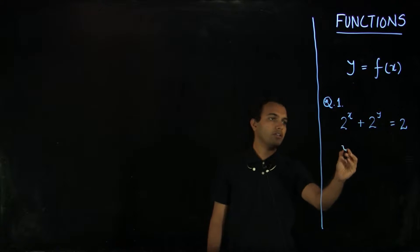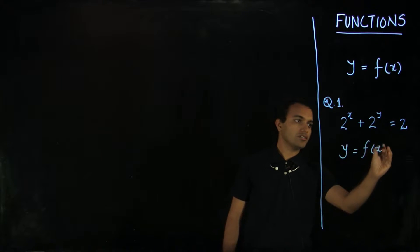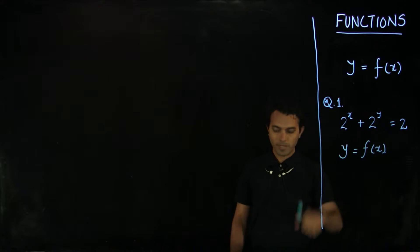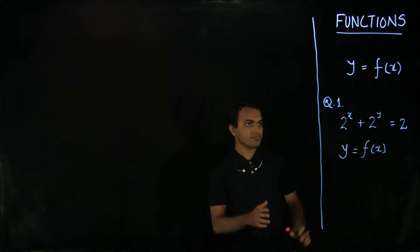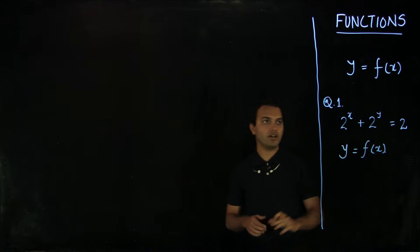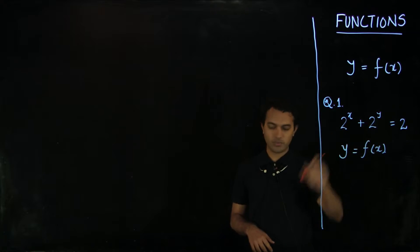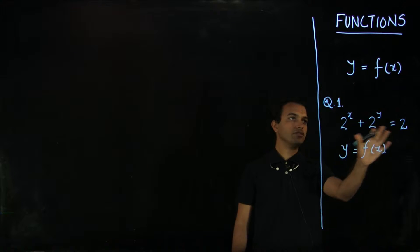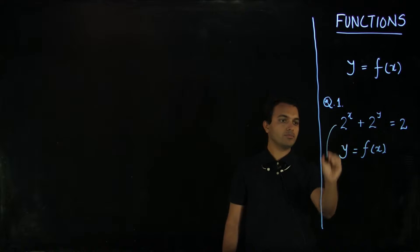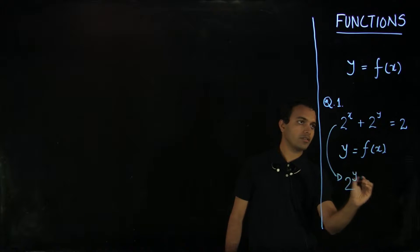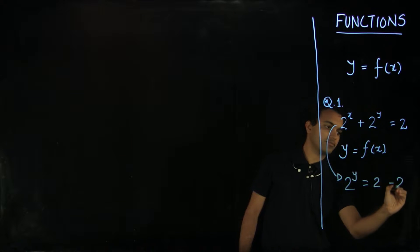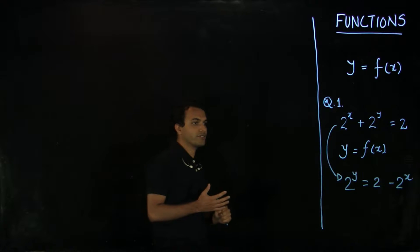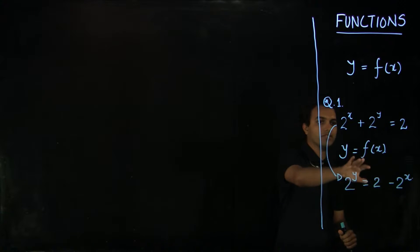Let us say we define a function y = f(x) using this equation. If a function is given in this format, it is an implicitly defined function. Here we have to come up with the definition of the function in the form y = f(x) from this equation. Let us see how we can do that. We first try to isolate y: once we have 2^y = 2 − 2^x, we need to isolate y as a function of x.